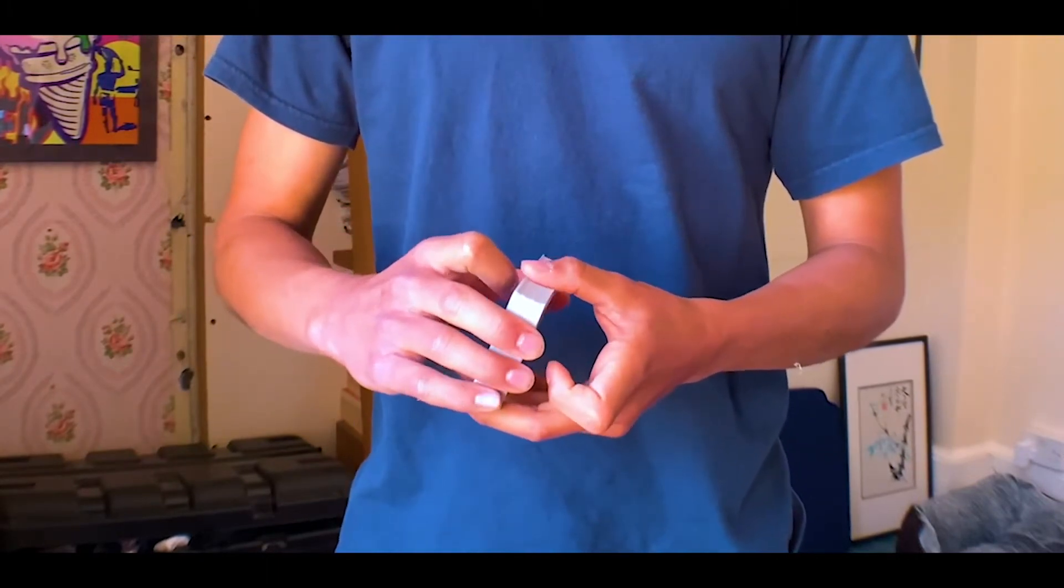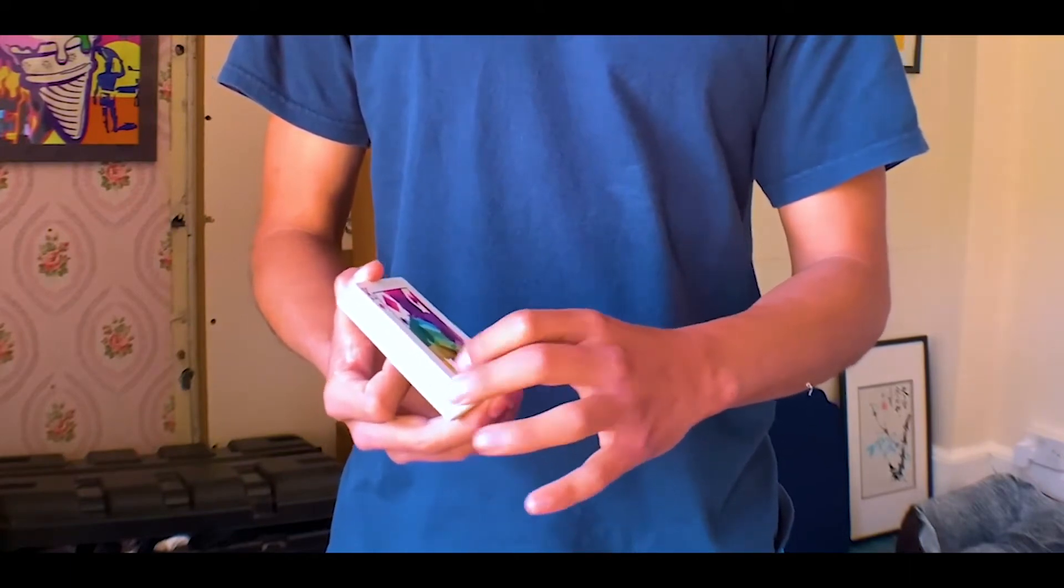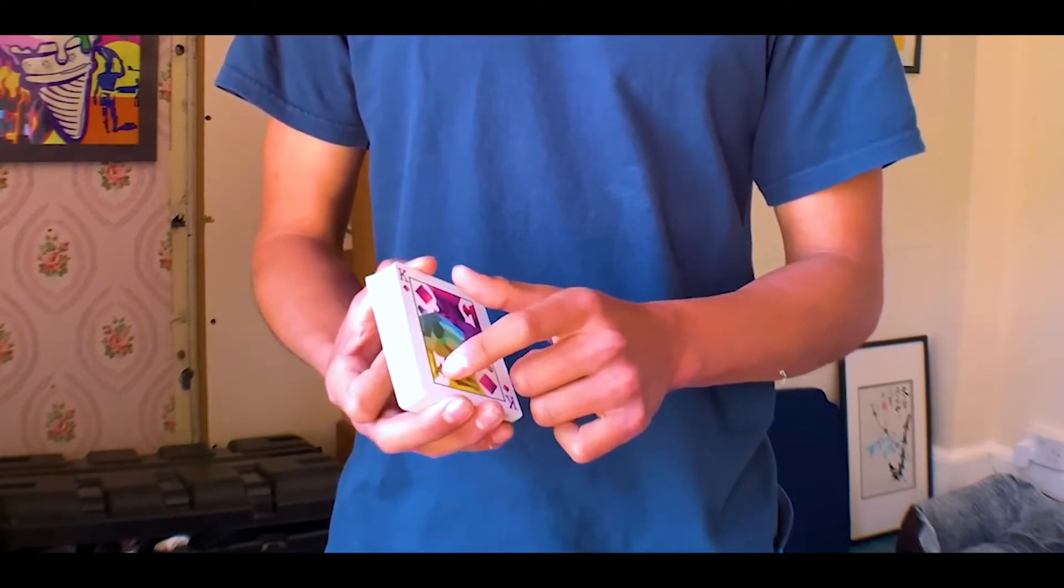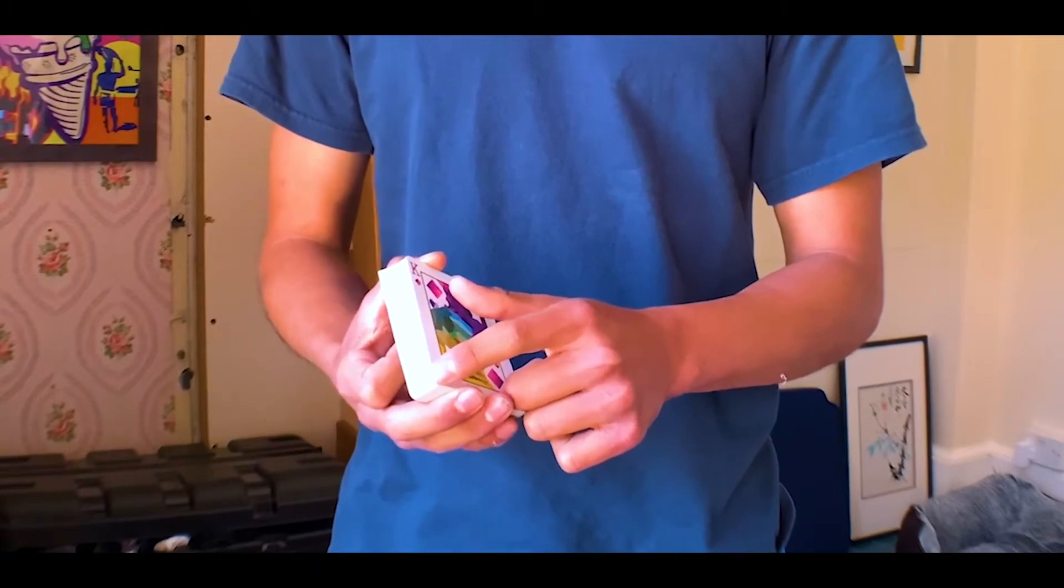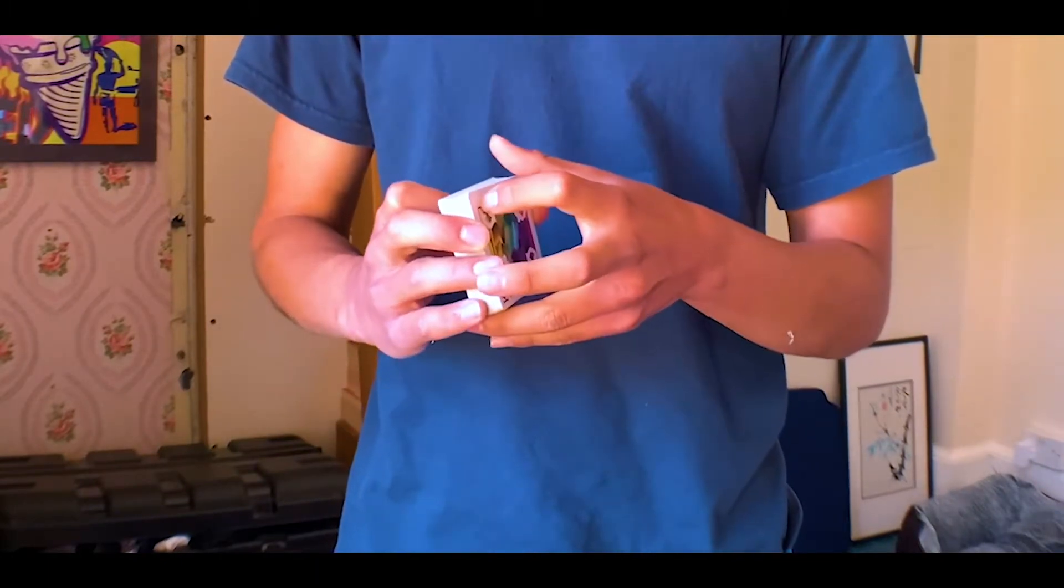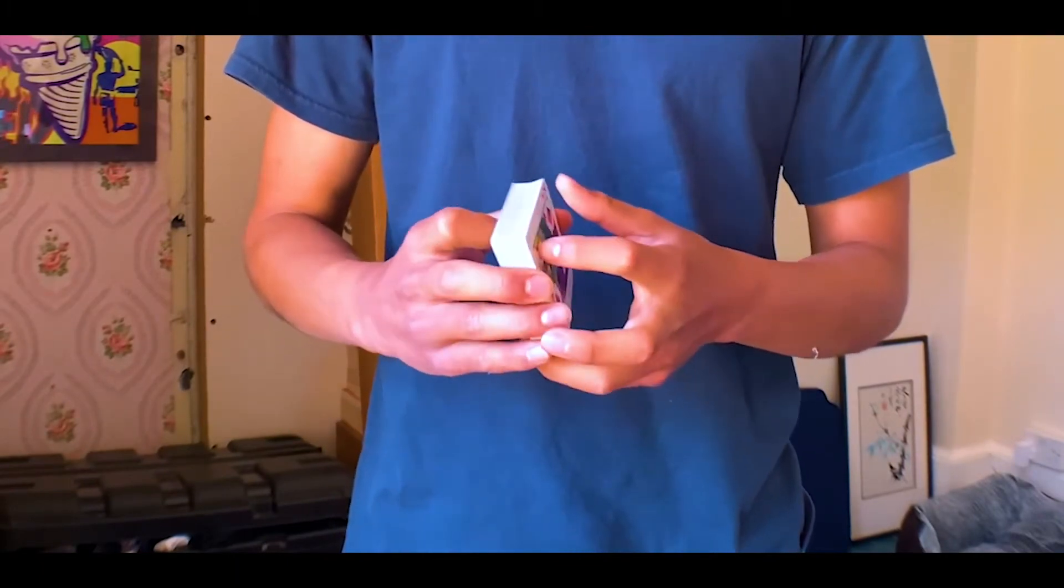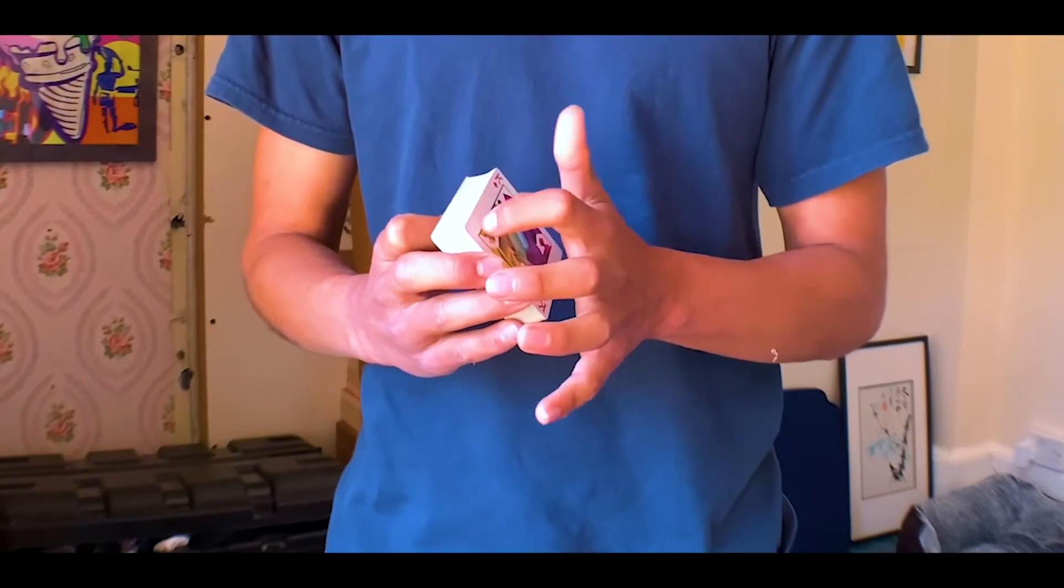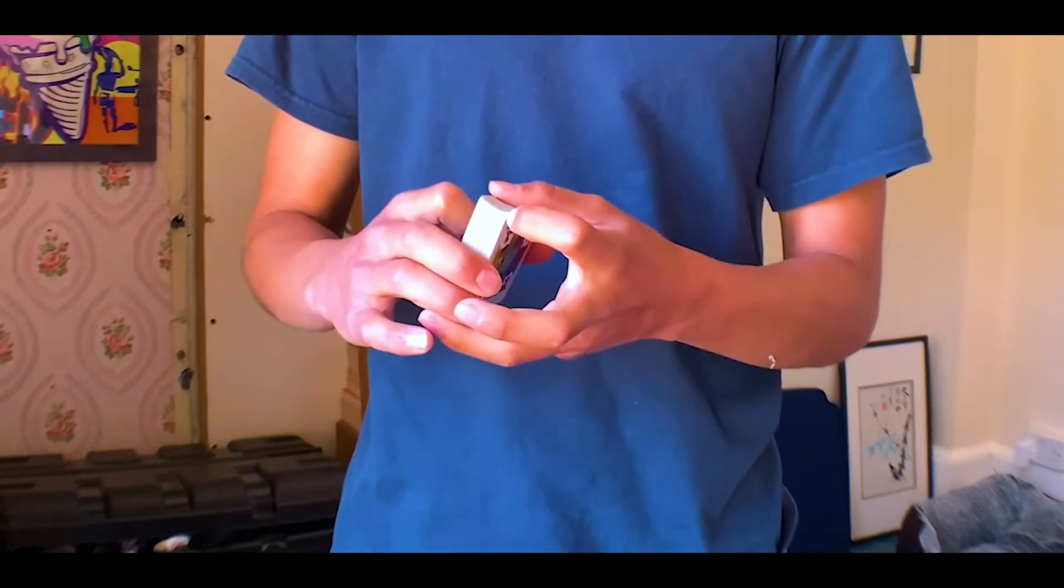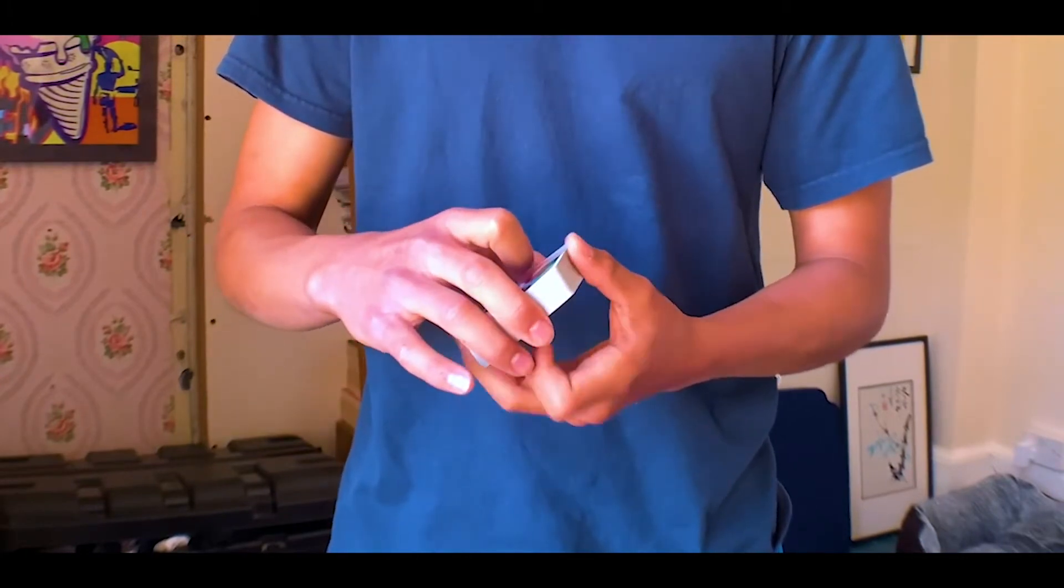For your finger placement, you want to place it around this corner of the deck. Something to note is the further up you place it, the bigger the fan will get. To start off, it's fine if you don't get the biggest riffle fan possible. You can just place it around here and get a nice controlled riffle fan instead of out here where it's harder to actually do the fan.